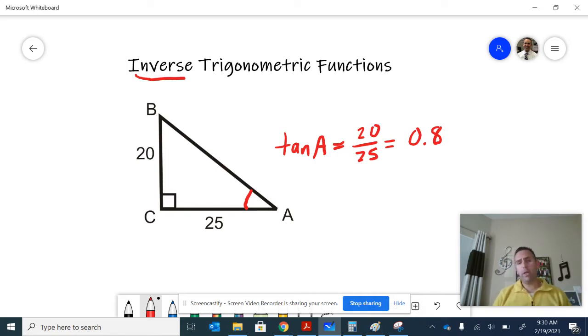What does that mean? Well, that means that's the tangent ratio. That's the relationship of the opposite to the adjacent, but it doesn't tell us the angle.